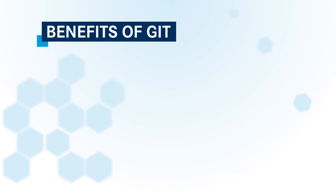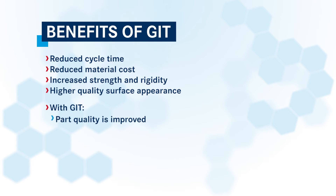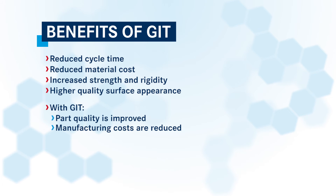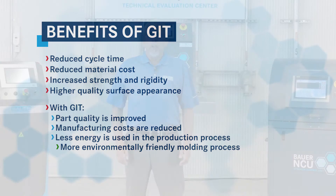Other benefits of GIT are reduced cycle time, reduced material costs, increased strength and rigidity, and higher quality surface appearance. With GIT, part quality is improved, manufacturing costs are reduced, and less energy is used in the production process — less energy for a more environmentally friendly molding process.